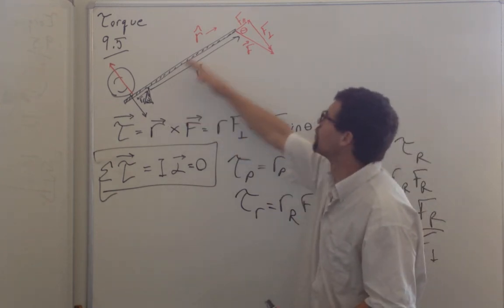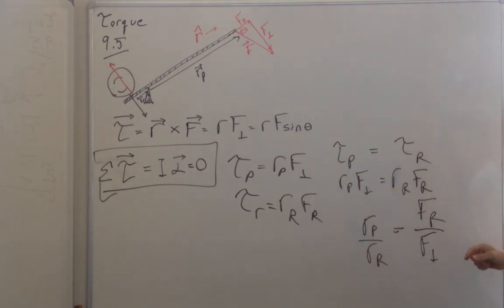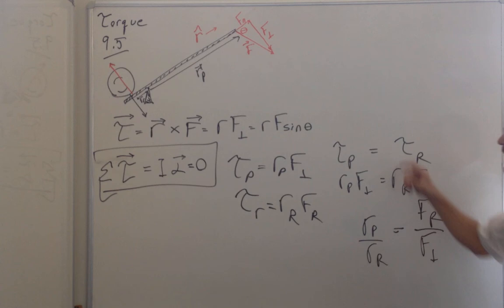So I want to move that rock. I'm going to make this moment arm big. I'm going to pull as perpendicularly as I can. And I'm going to know I have a force multiplier here. And the ratio of the forces is the inverse of the ratio of the radii.